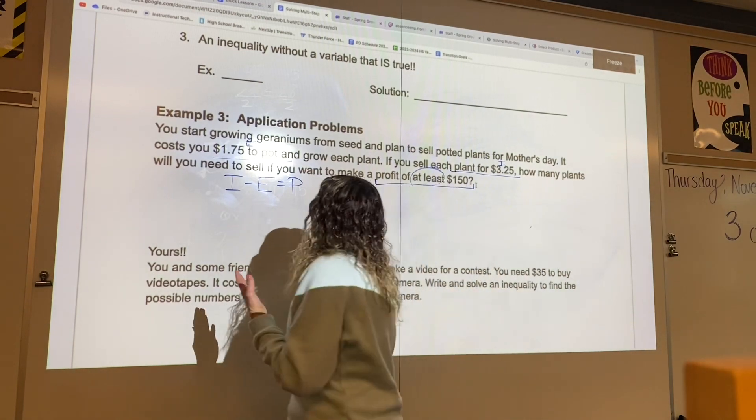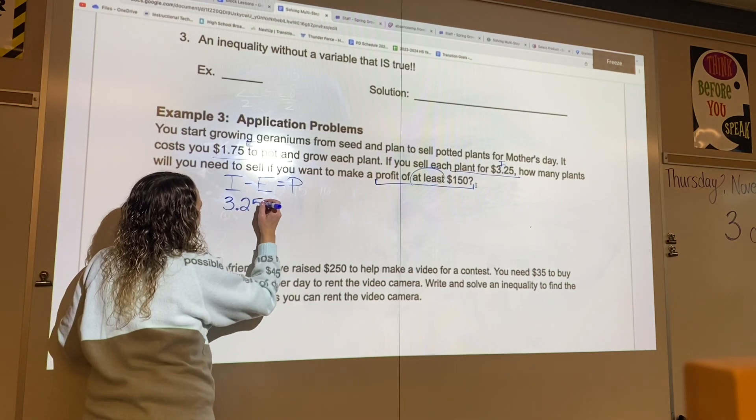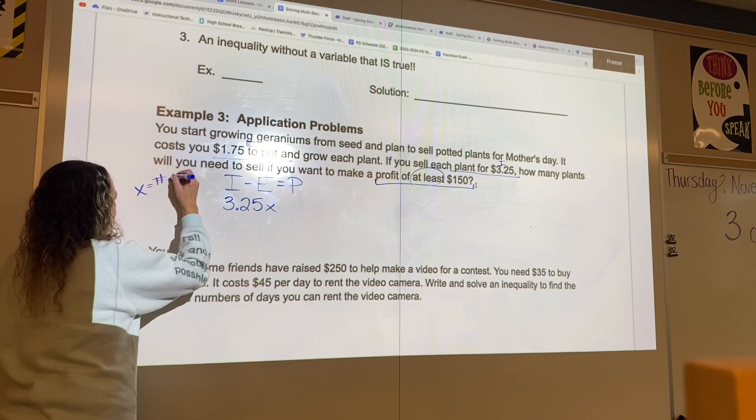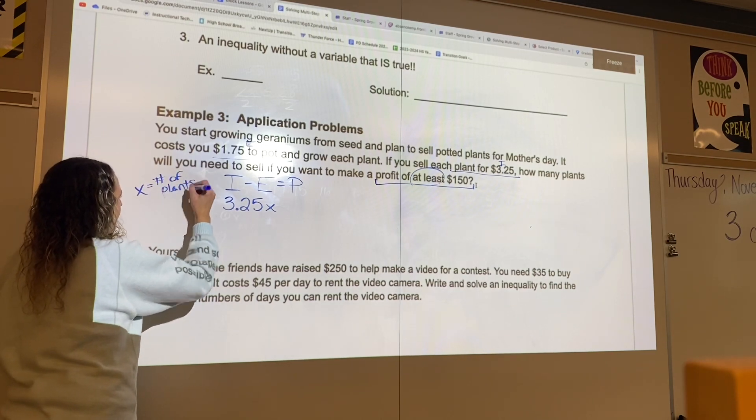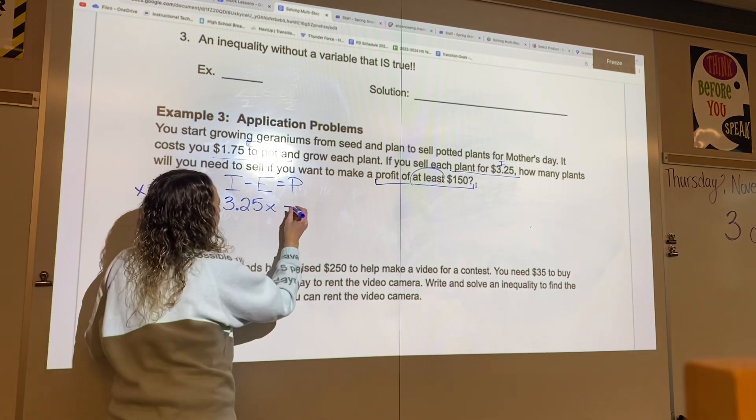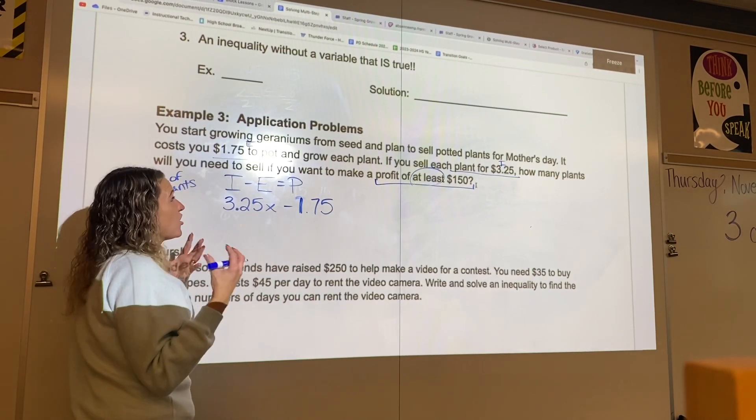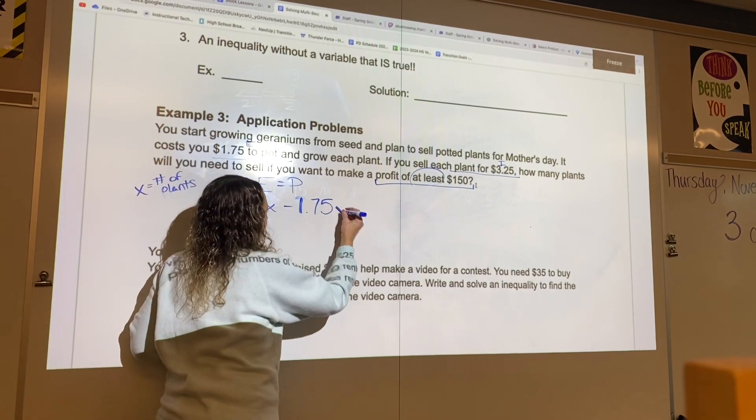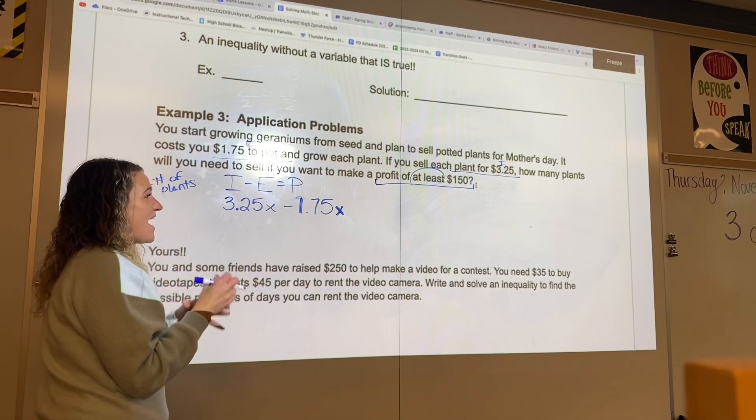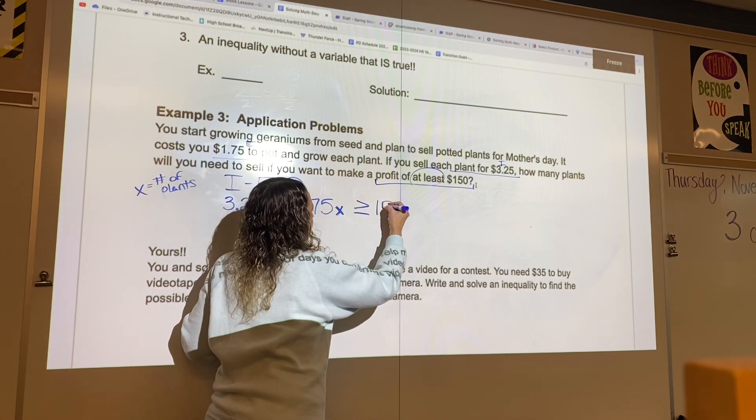So we know that we have our income, which is going to be $3.25 per plant. So I'm going to multiply that times the number of plants. That's going to be what our variable represents here. Let's go ahead and subtract our $1.75. But it's going to be $1.75 per plant also, because that's how much it's going to cost you. So we're going to have to make sure we keep the x on that as well. And we want at least $150. That means that all of this needs to be greater than or equal to $150.